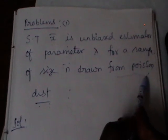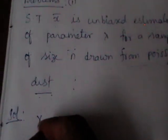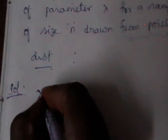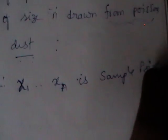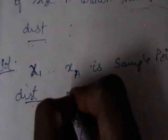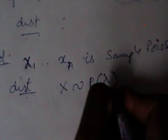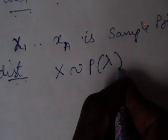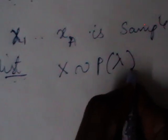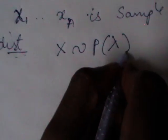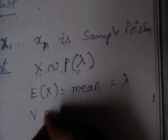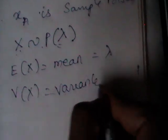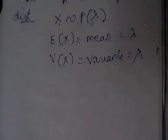First, try to identify the sample and from which population it is drawn. Here, X₁, X₂, ..., Xn is a sample from a Poisson distribution, written as X ~ P(λ). You should recall the mean and variance of key distributions — binomial, Poisson, normal, and exponential. For Poisson, the mean E(X) = λ and the variance = λ.